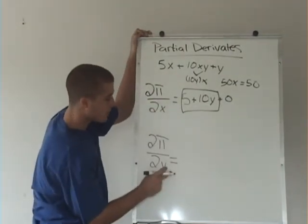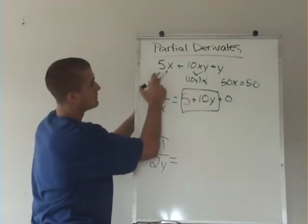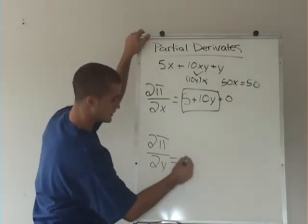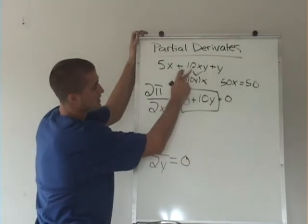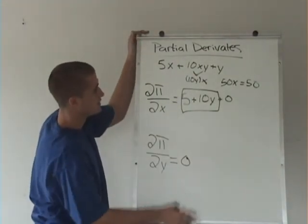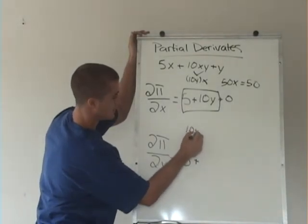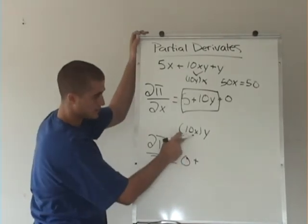If we do the same thing for y, we're holding x as if it were a number. So 5x, if that's a number, the derivative of it is going to be 0, plus 10xy. If we pretend like the x is a number, the derivative of 10xy is just going to be 10x.